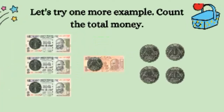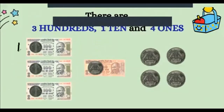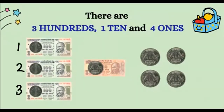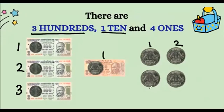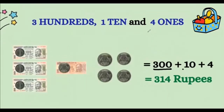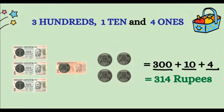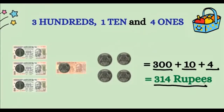Let's try one more example. Can you count the total money here? One, two, three — three notes of hundreds. One note of ten. And one, two, three, four — four coins of ones. Three hundreds can be written as three hundred, one ten can be written as just ten, and four ones is just four. So the total money is three hundred and fourteen rupees. Excellent!